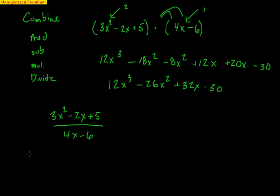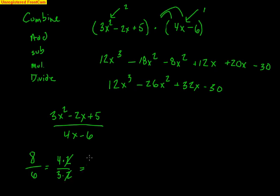For example, if I have 8 divided by 6: 8 is 4 times 2, 6 is 3 times 2, so the common factor of 2 could be canceled. But you have to factor first, and then you get 4 thirds. That's how you reduce fractions.